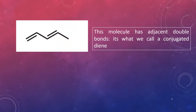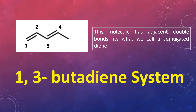In this conjugated diene system, we can number the carbons on which the double bonds are present: 1, 2, 3, and 4. Such a system is called a 1,3-butadiene system. Carbons 1 and 3 both have double bonds on them, and therefore this name is 1,3-butadiene system. Remember, this is not IUPAC nomenclature or IUPAC numbering. We give carbon number 1 to the carbon on which the double bond is present and then proceed further with the numbering.